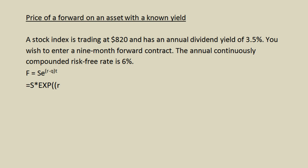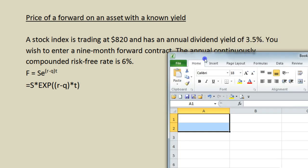So we are going to use S times EXP, open parentheses, open parentheses, the interest rate minus the yield on the investment, close parentheses, times time, close parentheses. This is important to make sure we get everything in the right order. To emphasize: the EXP function in Excel always takes its own set of parentheses, and if the equation itself has parentheses, you need those parentheses as well.